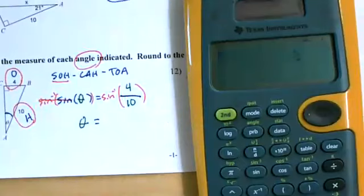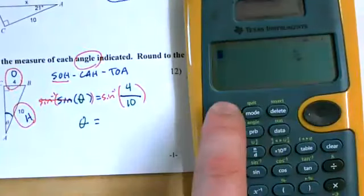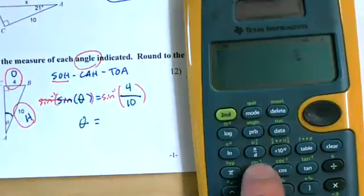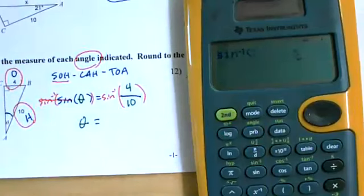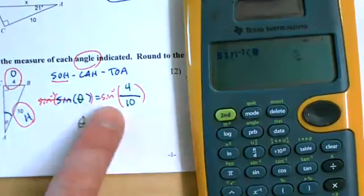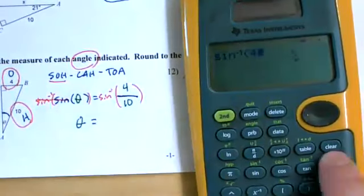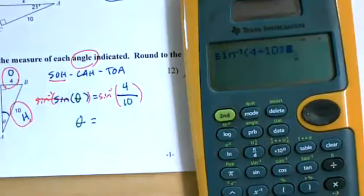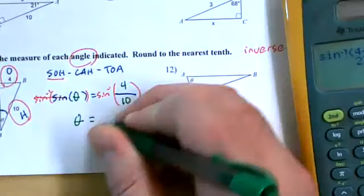So let's get some space here. So inverse sine, you're going to need to, for most of your calculators, you'll need to tap the second key. And then the sine, that should give you the sine with the little negative one. That's your inverse sine. And we're doing the inverse sine of 4 divided by 10. Coming up to about 23.6. That's an angle, so it would be 23.6 degrees.